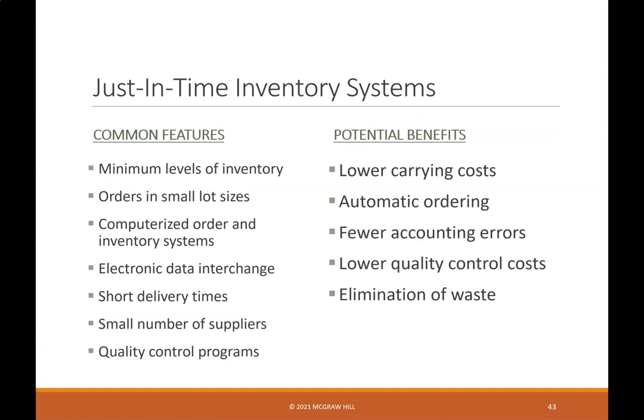Just-in-time (JIT) inventory systems have common features including minimum levels of inventory, orders in small lot sizes, computerized order and inventory systems, electronic data interchange, short delivery times, a small number of suppliers, and quality control programs. Potential benefits include lower carrying costs, automatic ordering, fewer accounting errors, lower quality control costs, and elimination of waste.